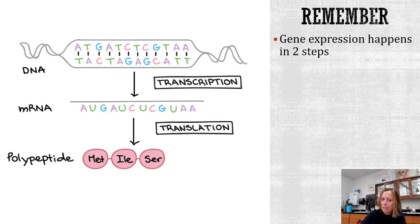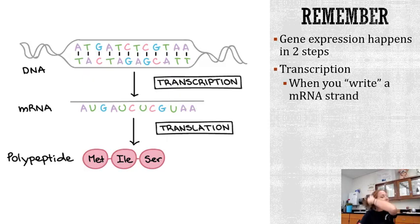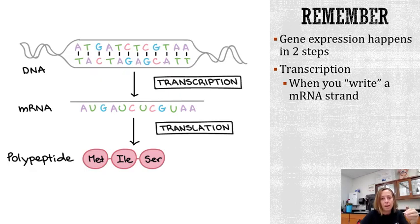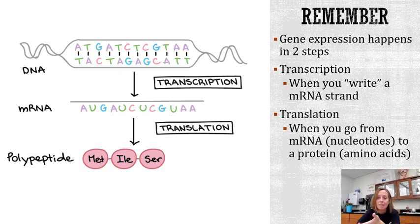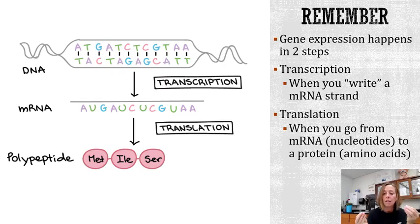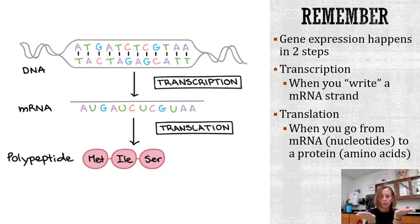Here's our transcription and translation process. Gene expression happens in two different steps. Transcription is when you write an mRNA strand — you're taking the DNA and rewriting it, copying it into mRNA. The only difference is when you do your complementary base pairs, you're going to put U's rather than T's. Translation is then when you go from your mRNA nucleotide to a protein or amino acid — you're going from one organic macromolecule to a different organic macromolecule.